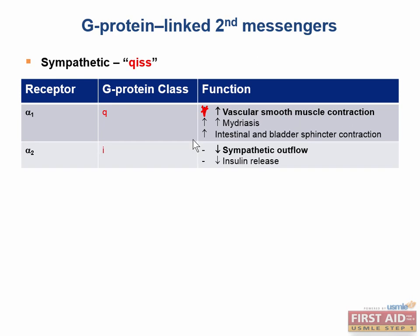The alpha-2 receptor is of the G-sub-I class, and it is located presynaptically, acting as a negative feedback mechanism to decrease sympathetic outflow. This is a unique characteristic: stimulating the alpha-2 receptor actually decreases sympathetic outflow, despite being a traditional sympathetic receptor. Alpha-2 receptors also decrease insulin release from the pancreas, decrease lipolysis, stimulate platelet aggregation, and decrease aqueous humor production in the eye.